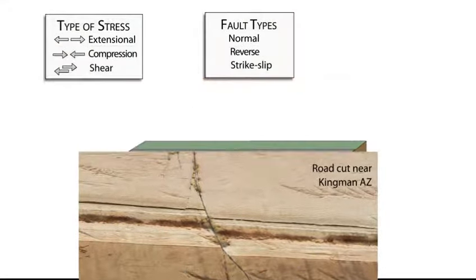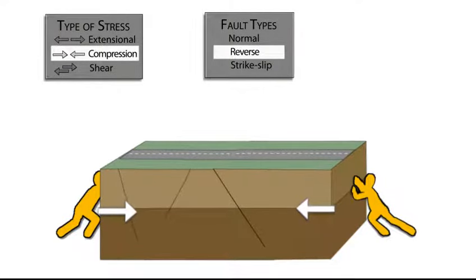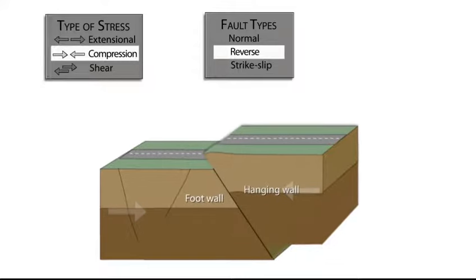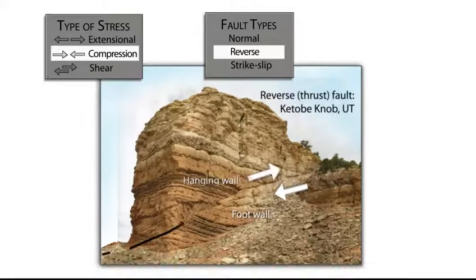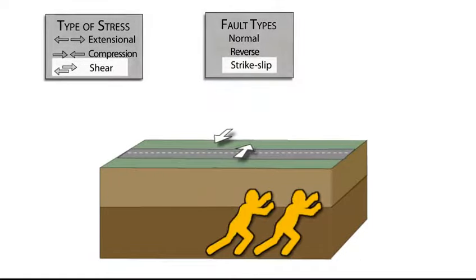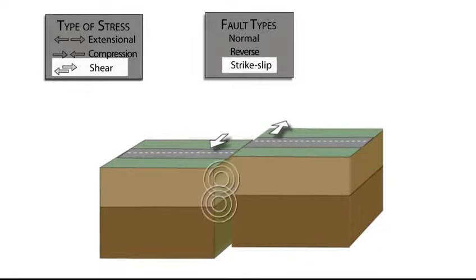If compressive stress is applied to the rock, the effect is to shorten it. The fractures that form look a lot like normal faults, but the motion is in the opposite direction — these are called reverse faults. When the rock is pushed horizontally in opposite directions, the shearing produces strike-slip faults.